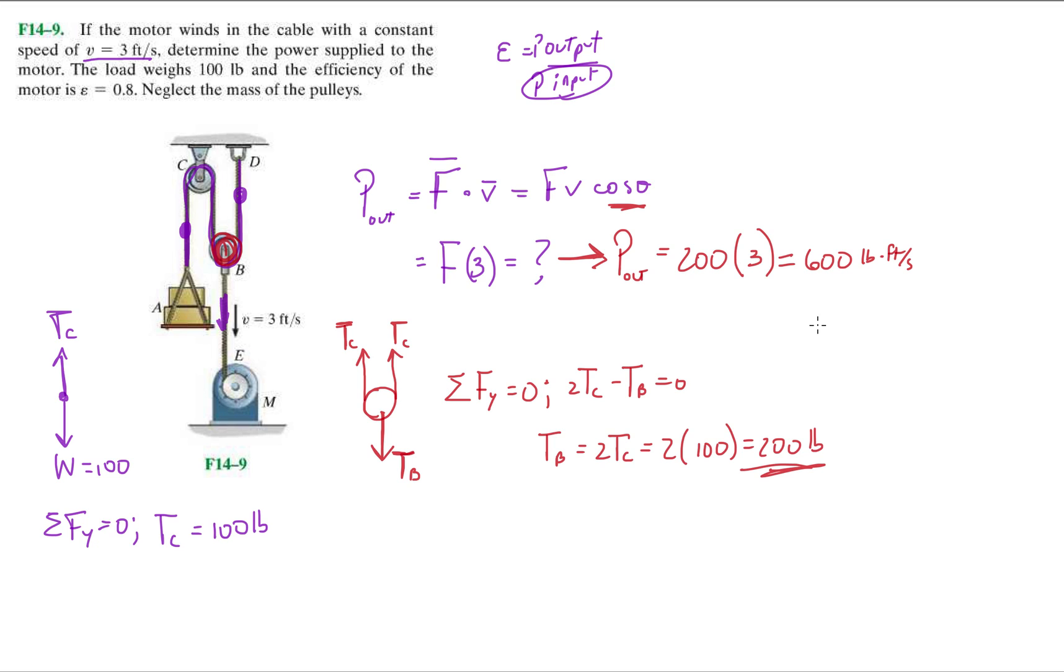Okay, and this is equal to 600 pound feet per second. However, because we're in the angle system, we have to convert that to horsepower. Which means we have to divide this value by roughly 550, and then we end up with 1.09 horsepower. I believe it's 1 horsepower, 1 HP is equal to 550 pound feet per second.